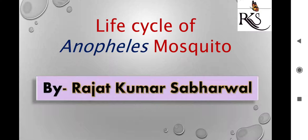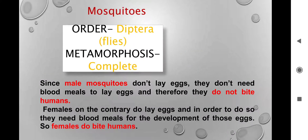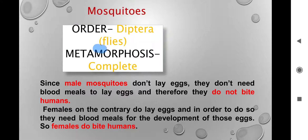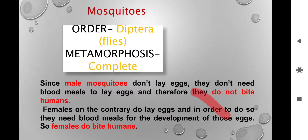When I talk of mosquito, what strikes your mind is that teeny tiny insect which buzzes around. But in biological terms, we define them under class Insecta and order Diptera. Mosquitoes are insects and the order is Diptera. You know we have kingdom, phylum, class, order, family, genus, species — this is the biological classification.